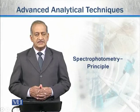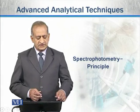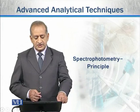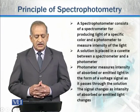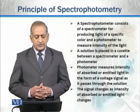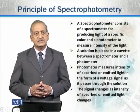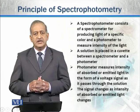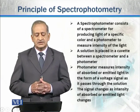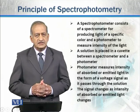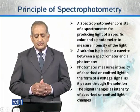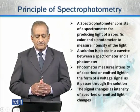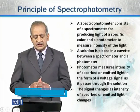Now we will discuss the principle of spectrophotometry and see how it works. A spectrophotometer measures the absorbance or transmittance of light when light passes through a solution. It consists of two main parts: a spectrometer and a photometer.